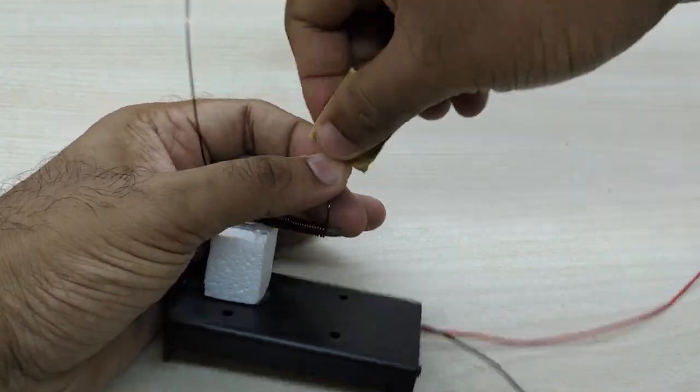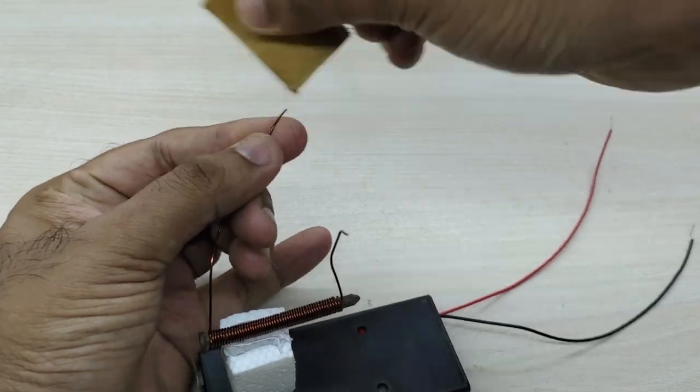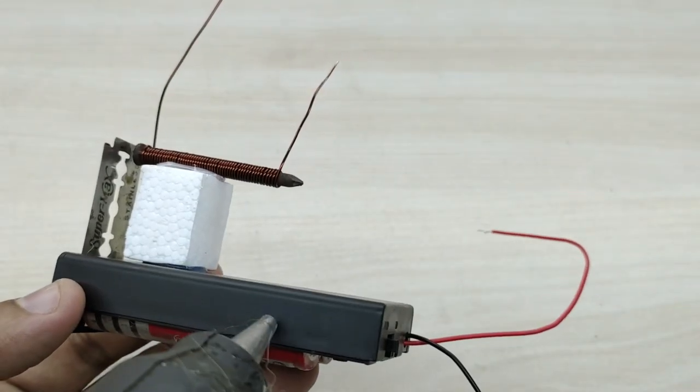Now remove insulation from both ends of the enameled copper wire. Fix a switch on the side of the battery pack as shown.